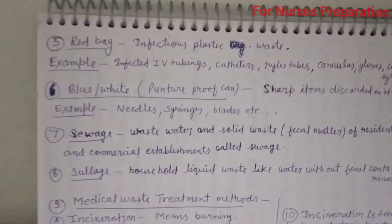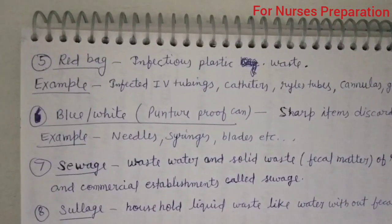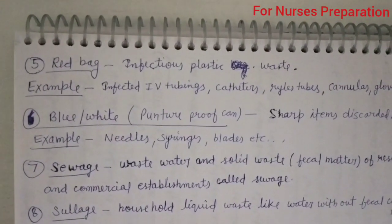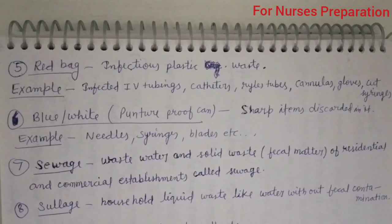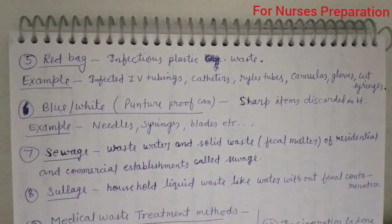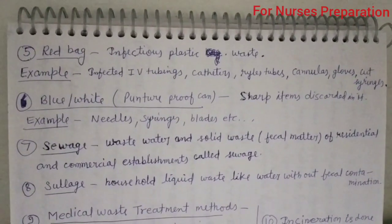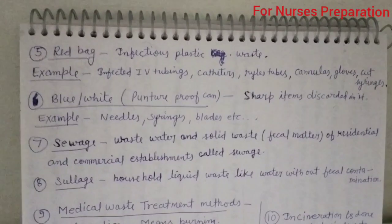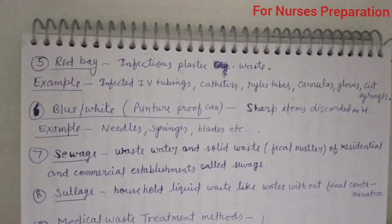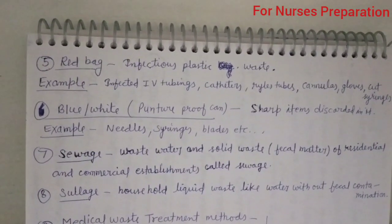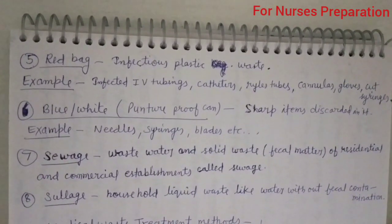Point number five: red bag. In this bag we collect infectious plastic waste. It includes infected IV tubings, catheters, rile tubes, cannulas, gloves, and cut syringes. We use the red color bag for all rubber and plastic-related waste. Always remember: red R stands for rubber, so rubber-related or plastic-related waste should be collected in the red bag.